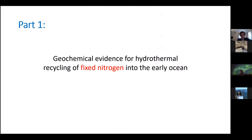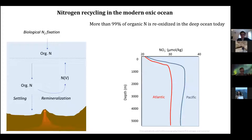The first part of this talk addresses how hydrothermal circulation could have affected the nitrogen cycle in the early ocean — in particular, recycling mechanisms of fixed nitrogen. If there's time, I'll also talk about modeling of copper venting into the ocean.